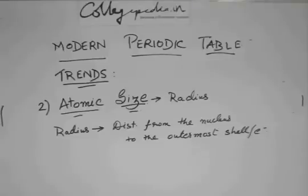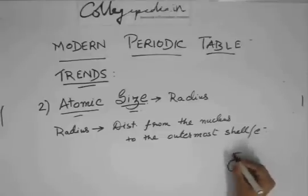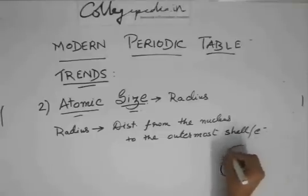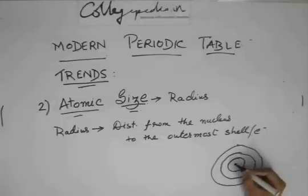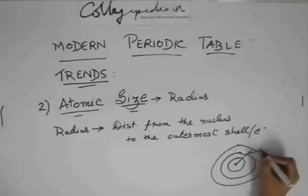The radius is nothing but the distance. If this is the atom and it has suppose 3 shells, the radius is the distance from the nucleus to the outermost shell. This is the radius.